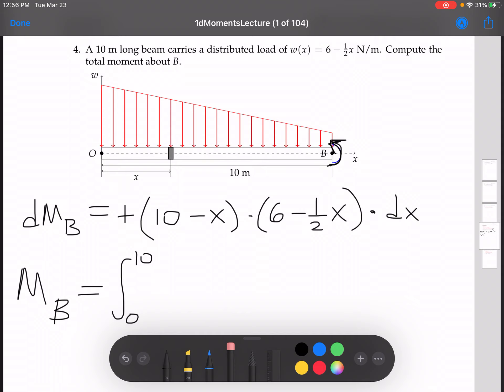Let's replace that with our formula that we found there. We've got 10 minus X times 6 minus 1 half X, DX.